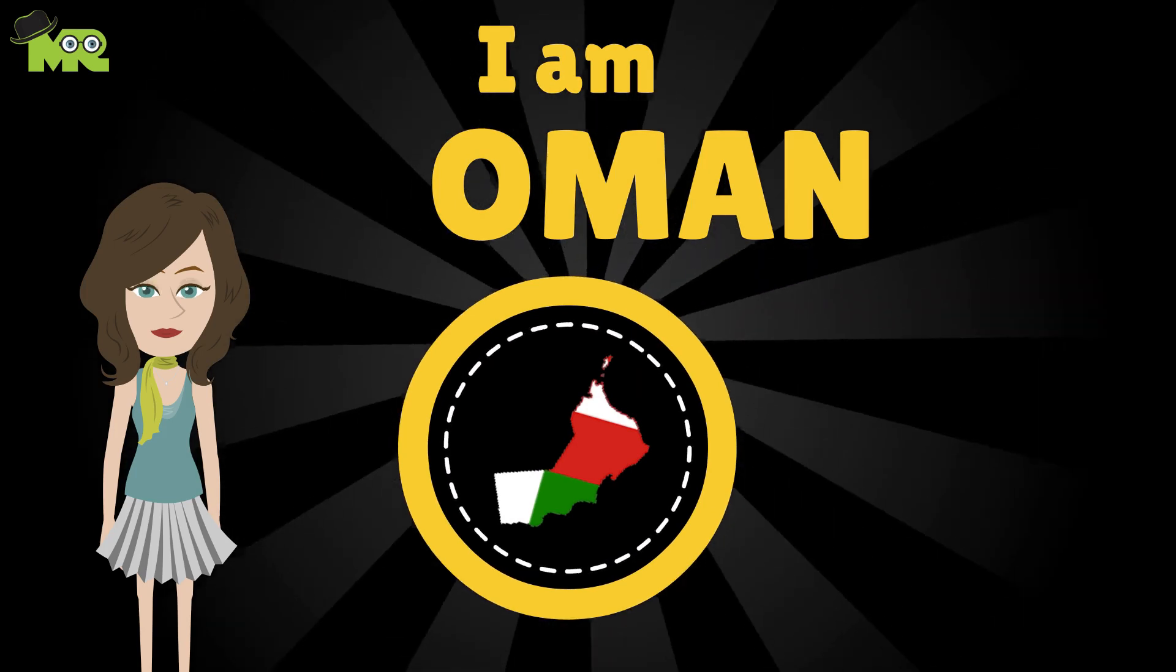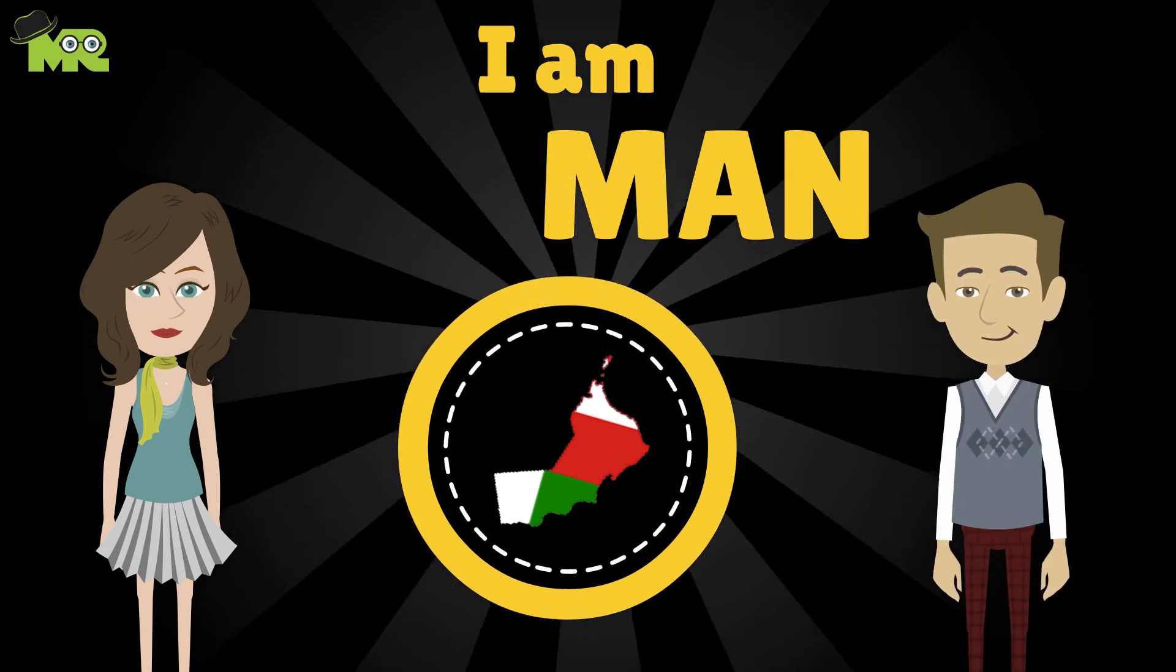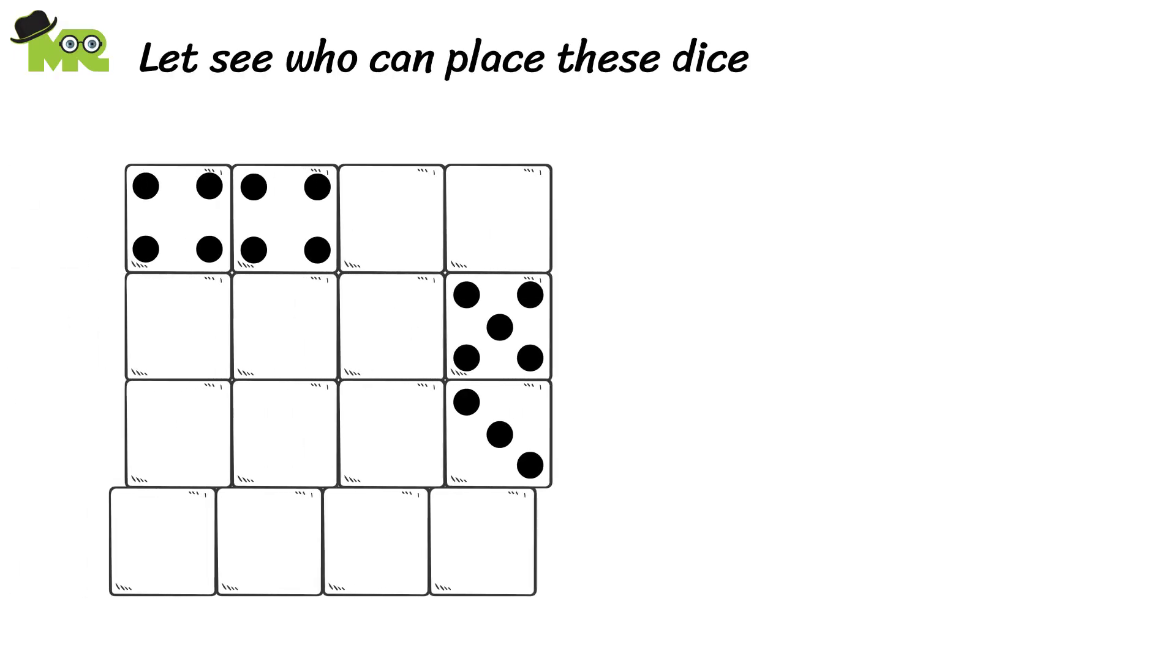become Oman, and remove O, I become man. Let's go to question five. Let's see who can place these dice